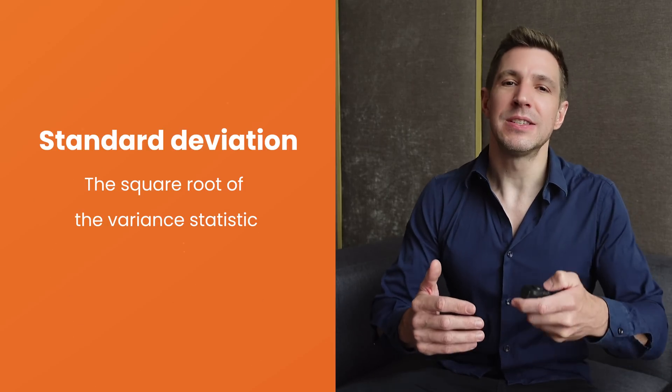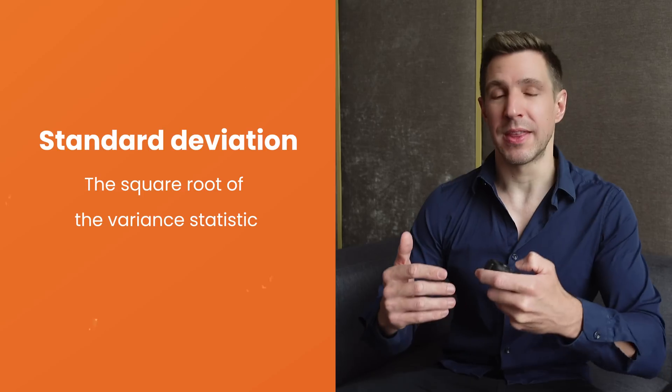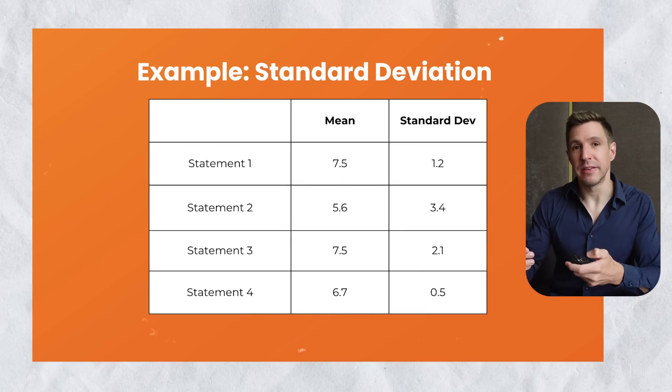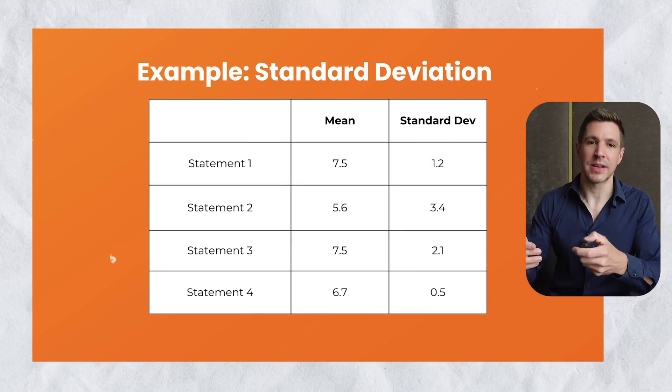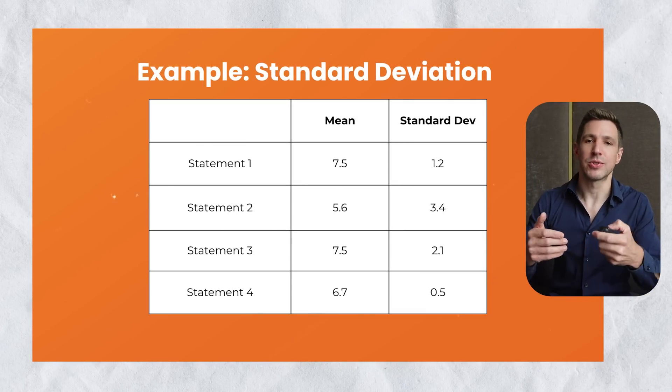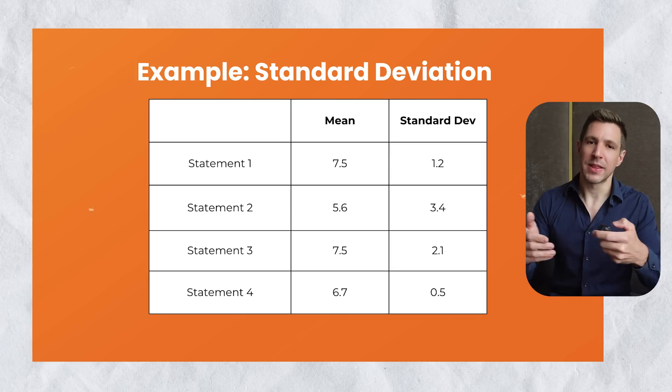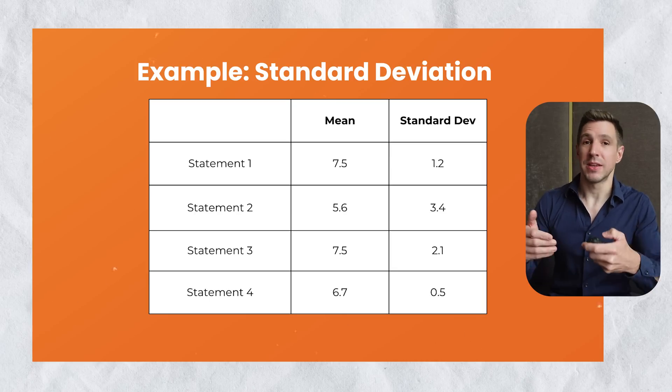Standard deviation is simply the square root of the variance statistic. It serves the same purpose as variance, but it's a little bit easier to interpret because it presents a figure that's in the same unit as the original data. You'll typically present your standard deviation statistic alongside your means when you describe data within your research, as this helps the reader interpret that mean within context.